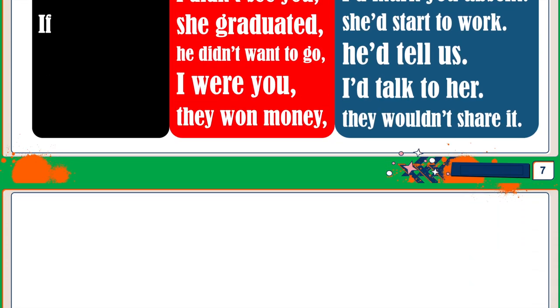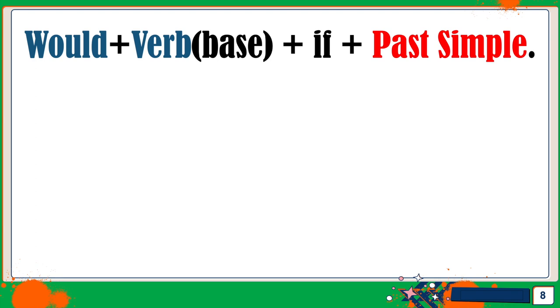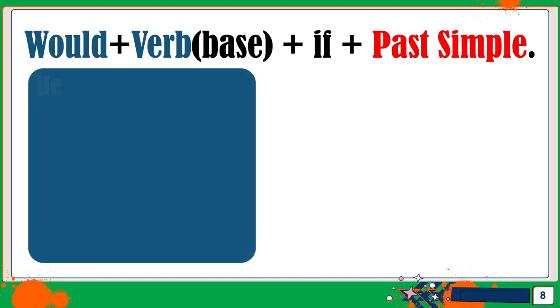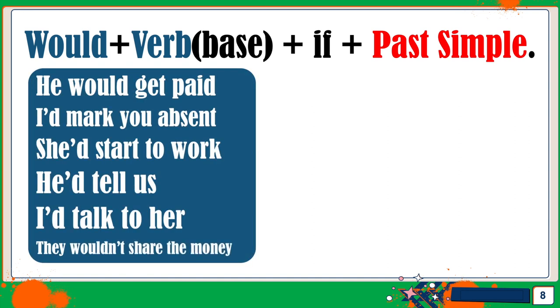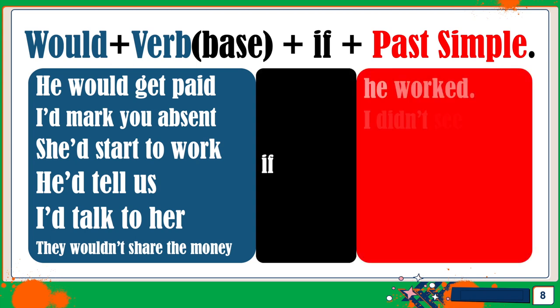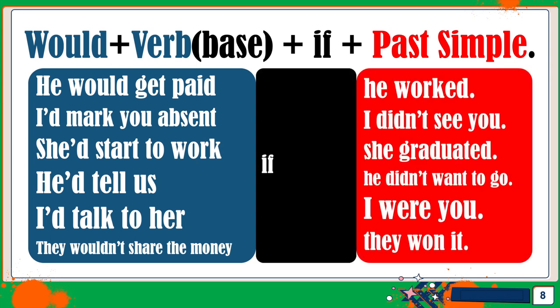There is another way to say this. You would use WOULD, plus the base of the verb, plus IF, plus the past simple. Let's take a look at our examples again: He would get paid if he worked. I'd mark you absent if I didn't see you. She'd start to work if she graduated. He'd tell us if he didn't want to go. I'd talk to her if I were you. They wouldn't share the money if they wanted.